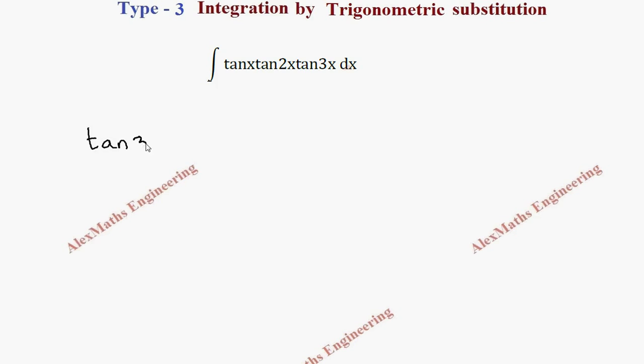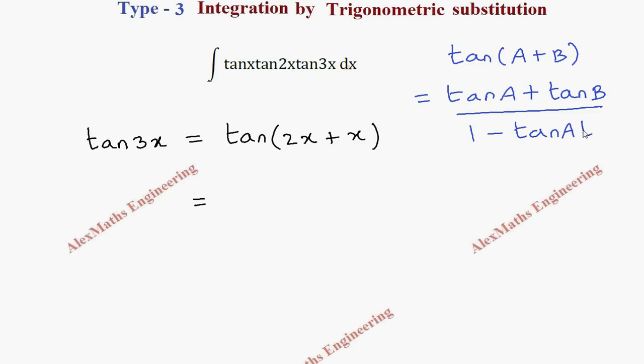Let's take tan(3x) as tan(2x + x). I'm going to split 3x as 2x plus x. Now I'm going to apply the tan(a + b) formula. The tan(a + b) formula is tan(a) plus tan(b) divided by 1 minus tan(a)tan(b).